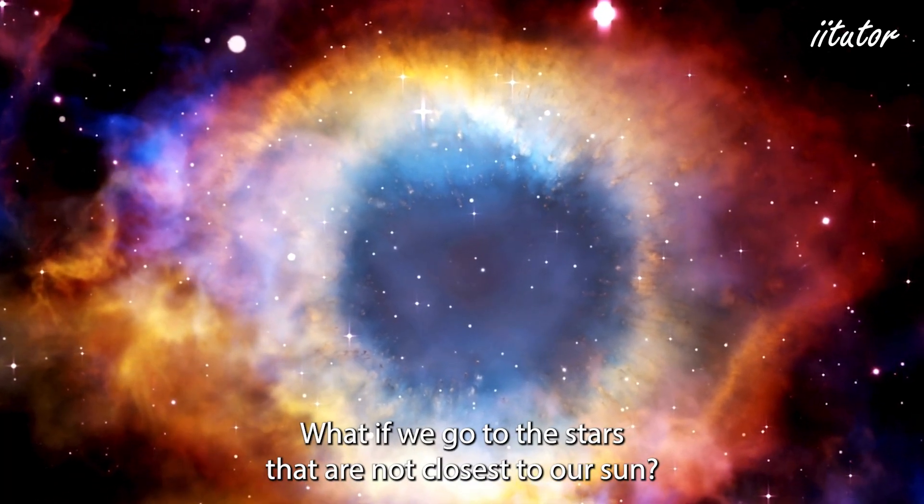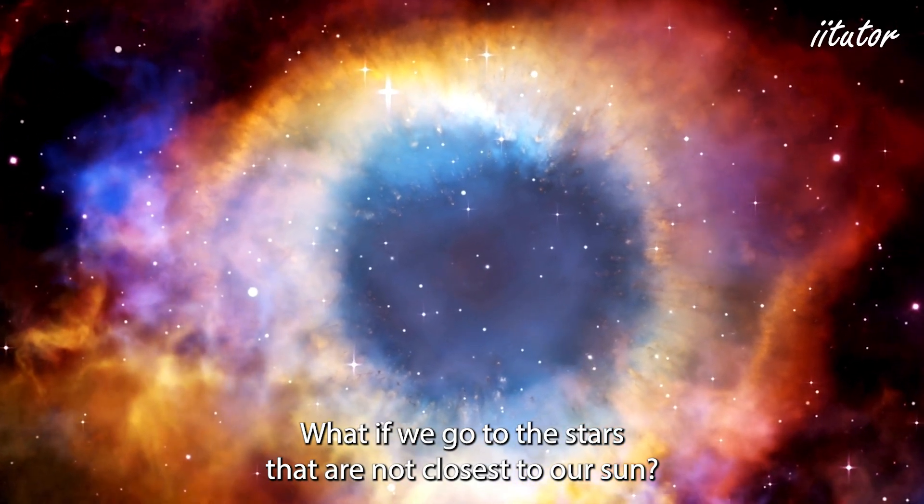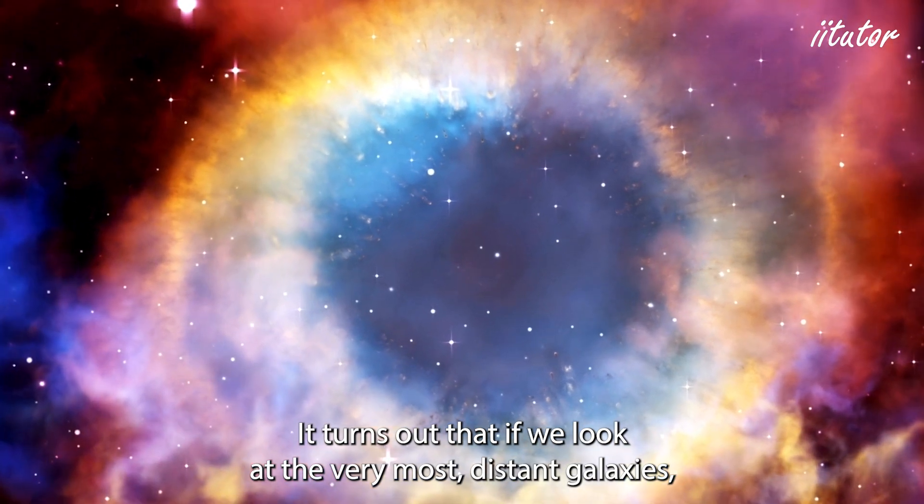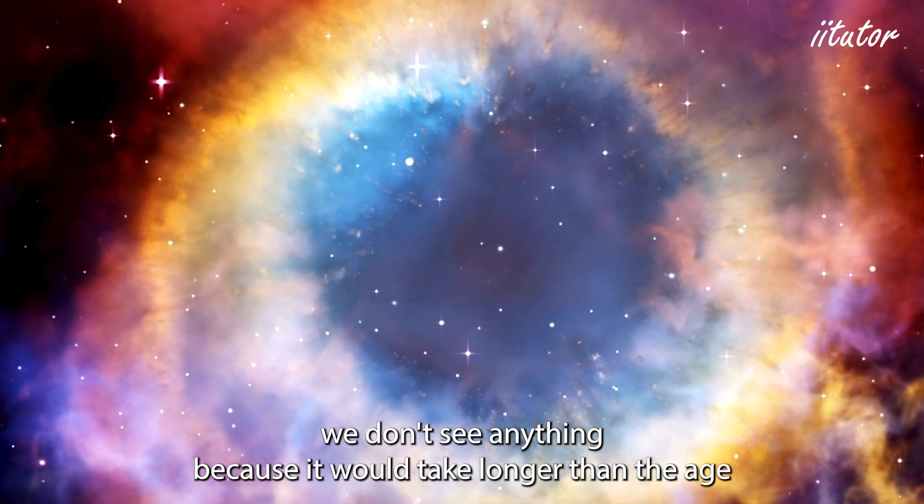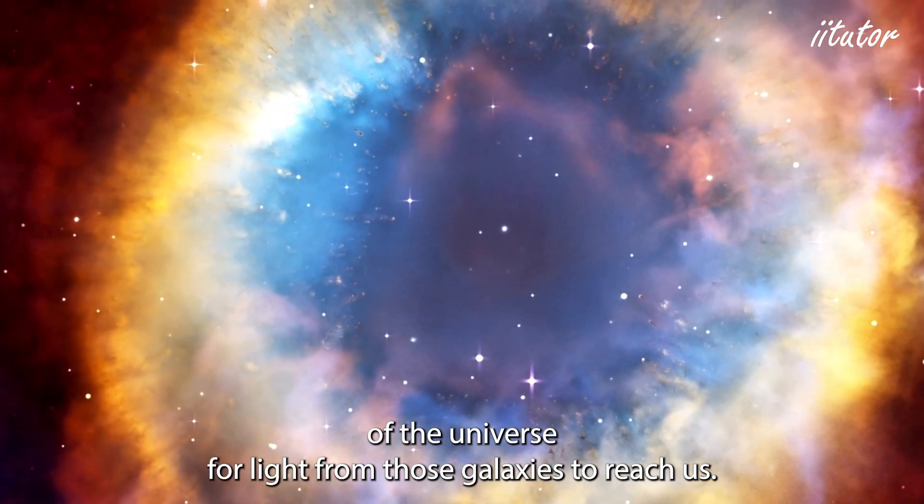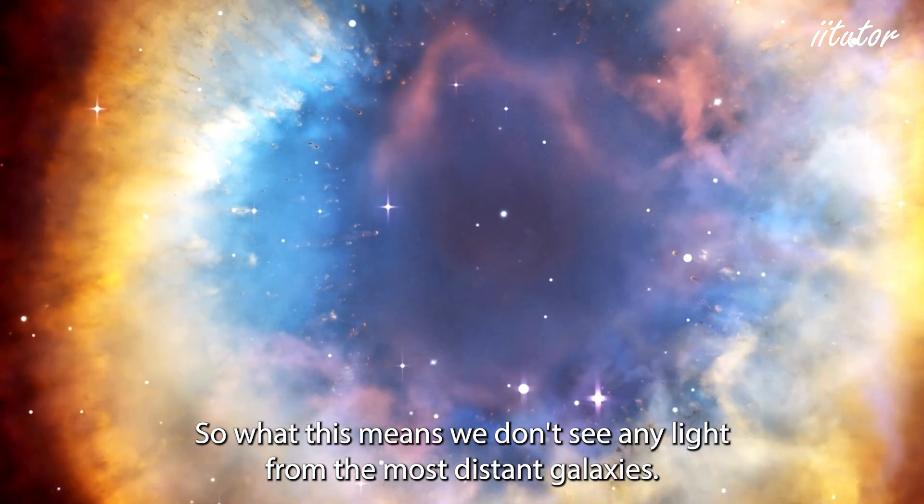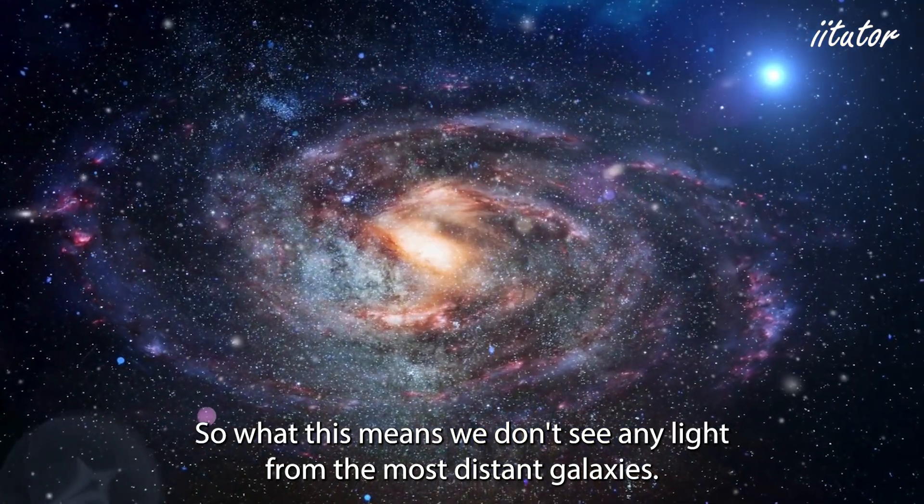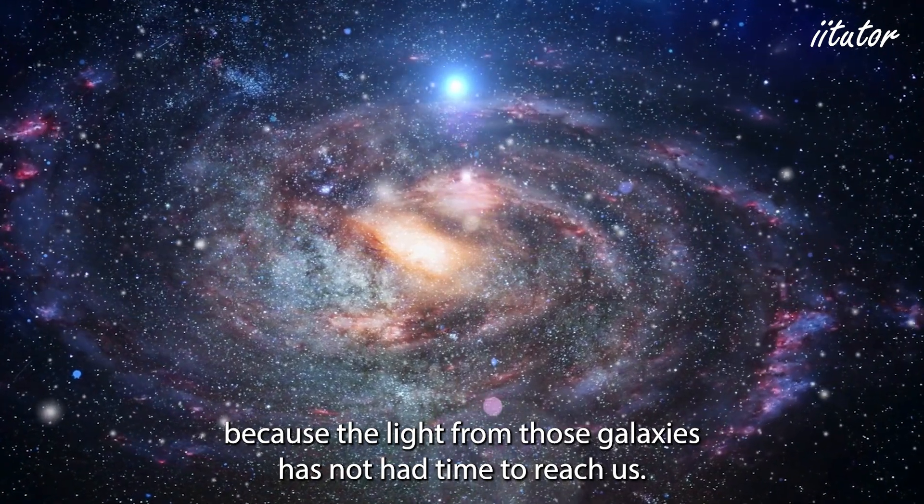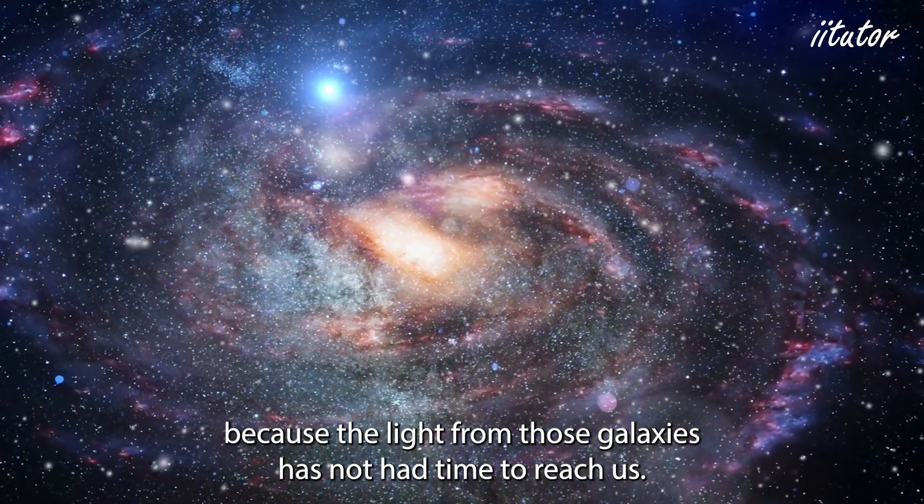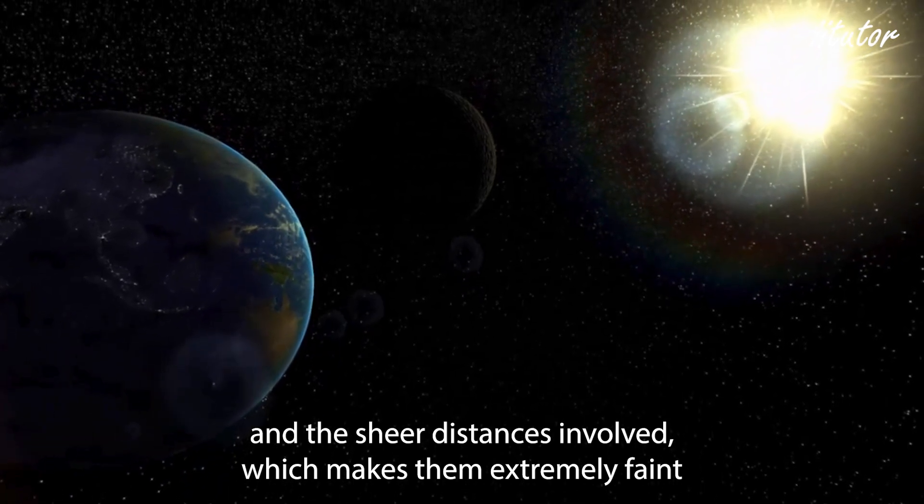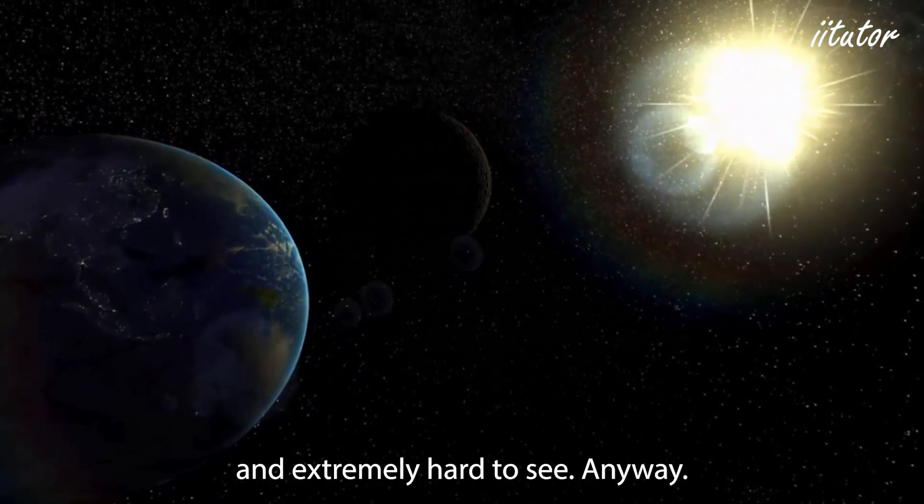So what if we go further back? What if we go to stars that are not closest to our Sun? It turns out that if we look at the very most distant galaxies we don't see anything because it would take longer than the age of the universe for light from those galaxies to reach us. So what this means is we don't see any light from the most distant galaxies. They're probably there but we'll never be able to see them simply because the light from those galaxies has not had time to reach us. In addition to that there's also the expanding of the universe and the sheer distances involved which makes them extremely faint and extremely hard to see anyway.